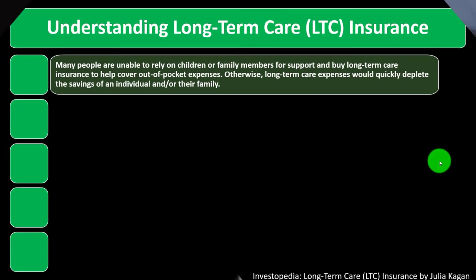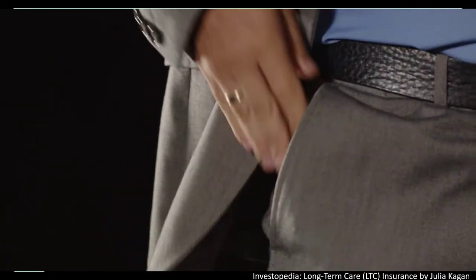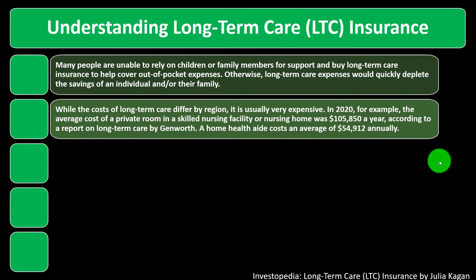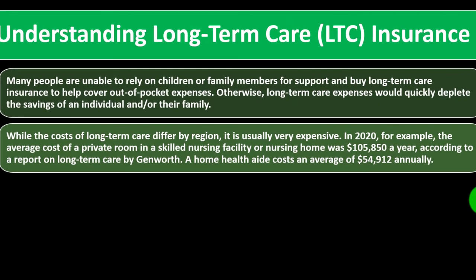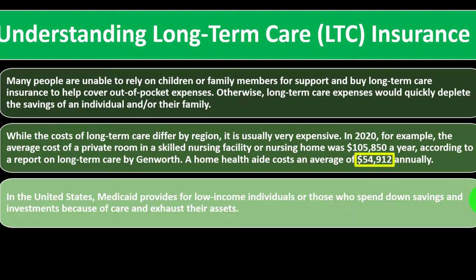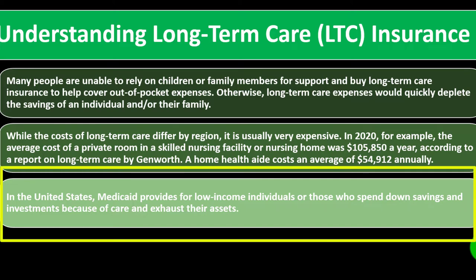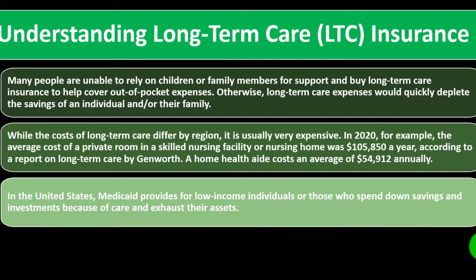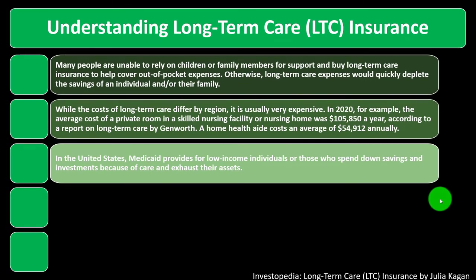If you're spending out-of-pocket for someone needing constant care all day, that will deplete funds quickly even with decent savings. In 2020, the average cost of a private room in a skilled nursing facility was $105,850 a year according to Genworth. A home health aide cost on average $54,912 annually. In the United States, Medicaid provides a safety net for low-income individuals or those who have exhausted their assets.